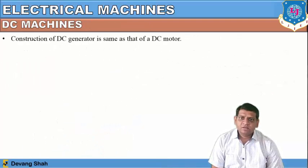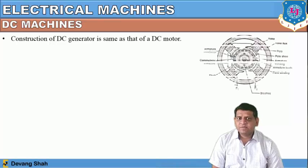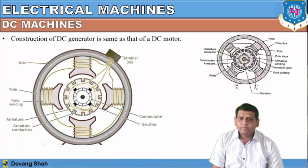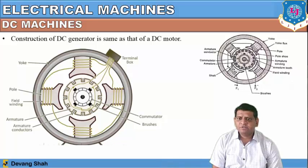The construction of the DC generator is the same as the DC motor. From this figure you can check the front view of the DC machine, where the middle part is defined as the armature, which is in a slotted form. Around this there are poles, and over each pole a field winding is wound. Inside is the armature winding with armature conductors, and the outer part is defined as the yoke.